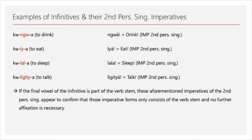Now let's look at the second person singular imperatives to check if they only consist of the stem. The verb 'kungwa' (to drink) has the imperative 'inwa'; for 'kulia' it's 'ya'; for 'kulala' it's 'lala'; for 'kuligitia' it's 'ligitia'. You could think that you just delete the infinitive marker to get the second person singular imperative — and if that's the case, these verbs confirm that these imperative forms consist only of the verb stem with no further affixation needed.